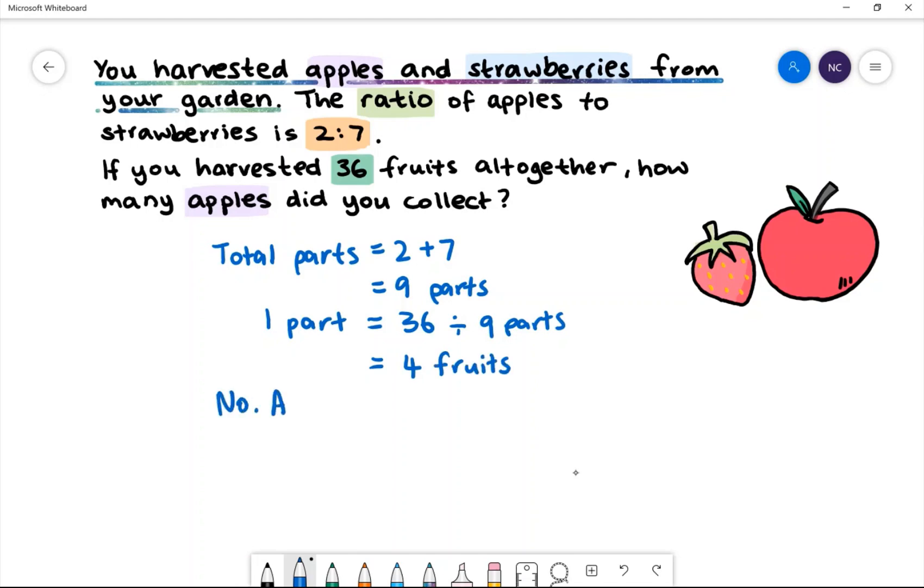Apples are worth 2 parts of the ratio. To find the number of apples, we can do 2 multiplied by 4 fruits. This gives us 8. Therefore, we have 8 apples that were harvested.